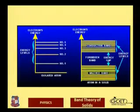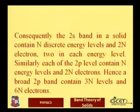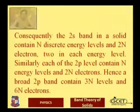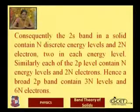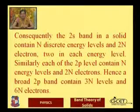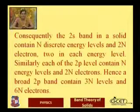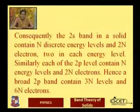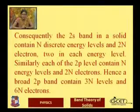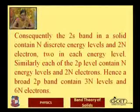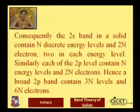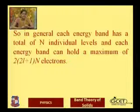The s-band in a solid contains N discrete energy levels and 2N electrons, because two electrons occupy each energy level. Similarly, each 2p level contains N energy levels and 2N electrons. Hence a 2p band contains 3N levels and 6N electrons, since there are three p subshell orientations.